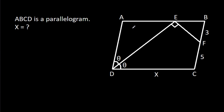In this video, we have been given that ABCD is a parallelogram and angle ADE is theta, angle CDE is theta, angle DEF is 90 degrees, BF is 3, CF is 5, and CD is X. Then we have to find X.